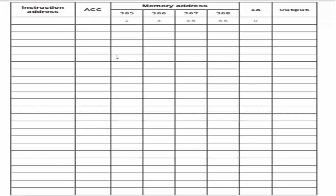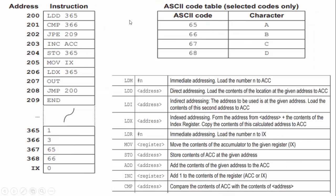In our first instruction at line 200, it says to load up the accumulator from address 365. What's at address 365? That is a one. So LDD 365 is direct addressing — we loaded the contents of the location at the given address to the accumulator. What's at 365? One, and we put it into the accumulator.